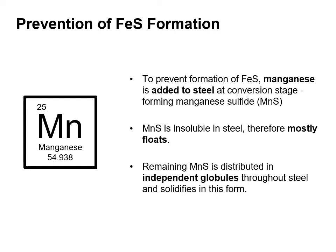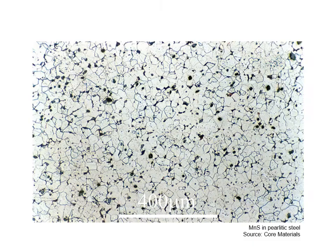To prevent the formation of iron sulphide, manganese is added to steel at the conversion stage, forming manganese sulphide. Manganese sulphide is insoluble in steel and therefore mostly floats, so we can scrape it off the surface as part of the slag. The remaining manganese sulphide is distributed in independent globules throughout the steel and solidifies in this form. An electron microscope image shows the formation of manganese sulphide in pearlitic steel.